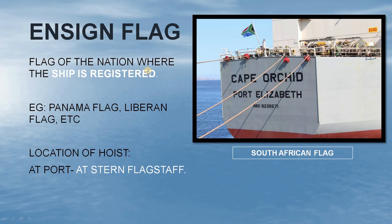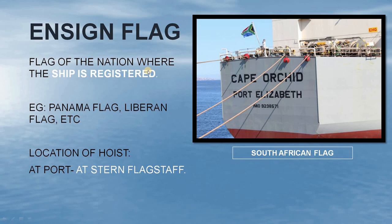Now, what is an ensign flag? The ensign flag is the flag of the nation where the ship is registered — for example, a Panama flag, Liberian flag, etc. Whenever the ship is at port, it is hoisted at the stern flagstaff. You can see in this picture the flag hoisted at the stern flagstaff — this is the South African flag, since the ship is registered in South Africa, with the port of registry being Port Elizabeth.